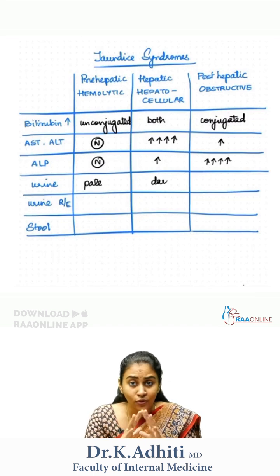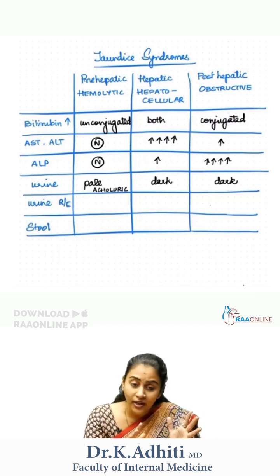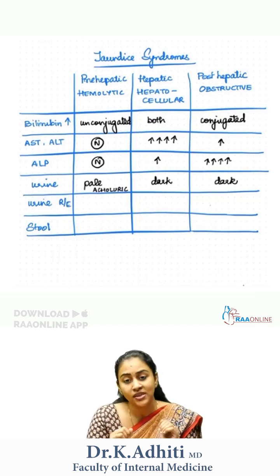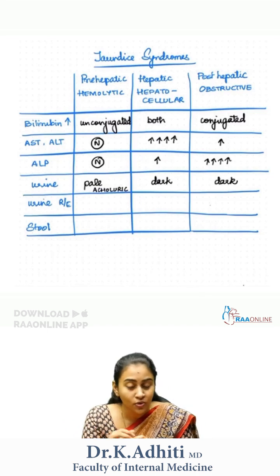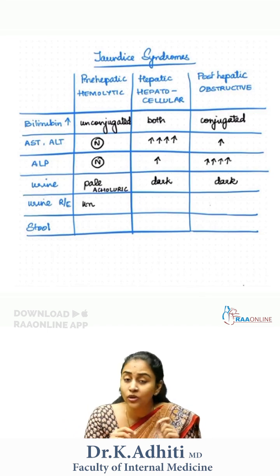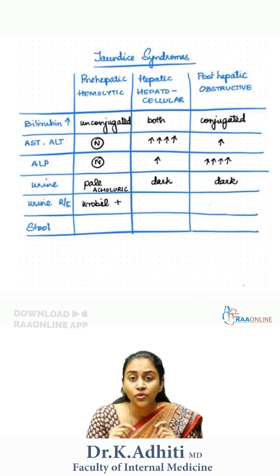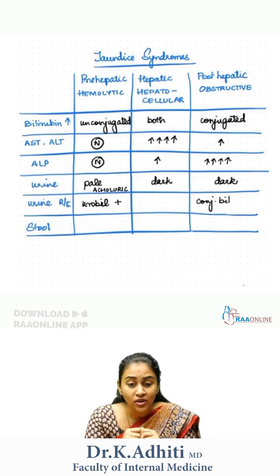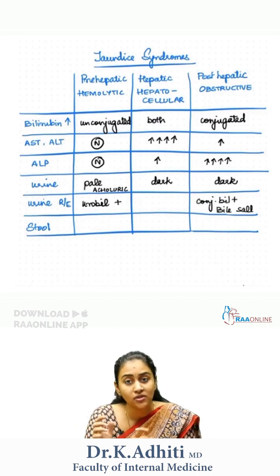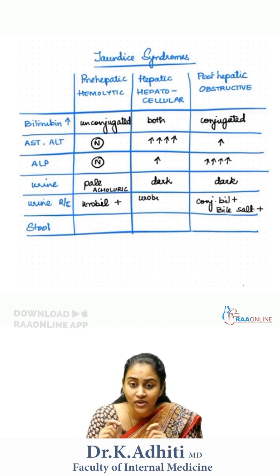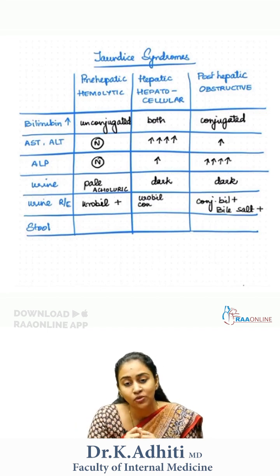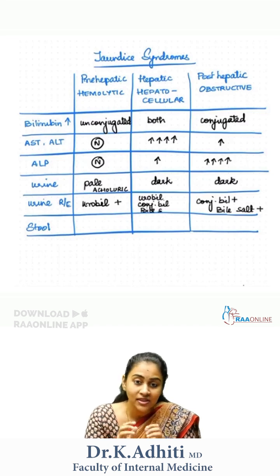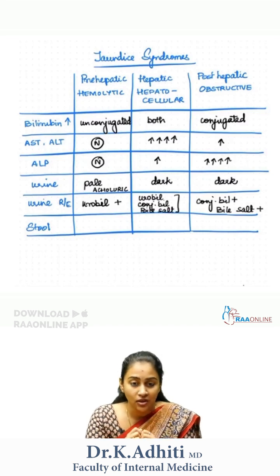When you look at the urine, if your urine is pale, it's probably hemolytic — that's why it's called acholuric jaundice. In hepatocellular and obstructive, the urine is going to be dark. On urinalysis, there is going to be unconjugated bilirubin in patients with hemolytic jaundice. In obstructive jaundice, the urinalysis will show bile salts and conjugated bilirubin. And everything is going to be present in hepatocellular jaundice.